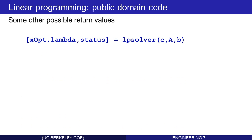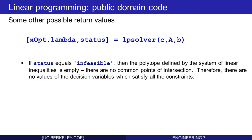There are some other possible return values. If status equals 'infeasible', then the polytope defined by the system of linear inequalities is actually empty. There are no common points of intersection of the half spaces defined by the constraints in the AX less than or equal to B equation. Therefore, there are no values of the decision variables which satisfy all the constraints — that's called an infeasible problem.